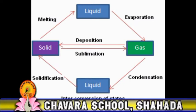Have a look at this diagram which will tell us the interconversion of states of matter and how it takes place. Solid converts to liquid state by melting — we can use the example of ice. Then liquid converts into the gaseous state by the evaporation process. Then the gaseous state converts into the liquid state by condensation. Afterwards, liquid changes to solid by solidification. Solid can also directly change to the gaseous state — this process is known as sublimation. And the gaseous state changes to solid by the deposition process.